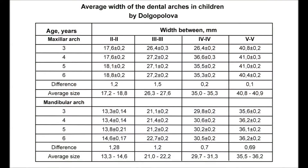For example, the width of the dental arch in a 5-year-old child equals 36 mm in the area of the second primary molars, while the table value is 41 mm. Thus, one can conclude that the dental arch is narrowed in the lateral segment.